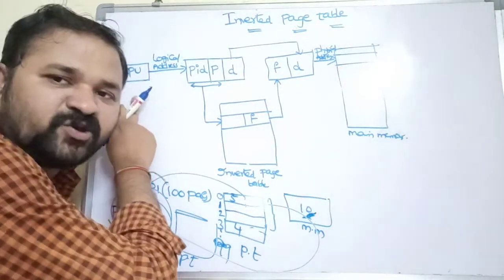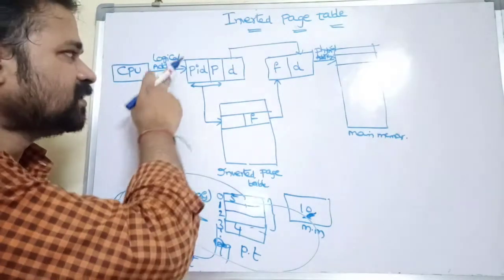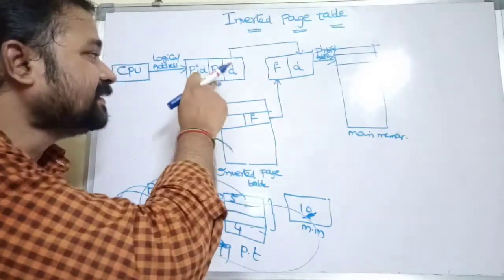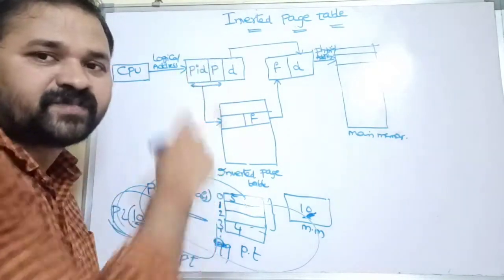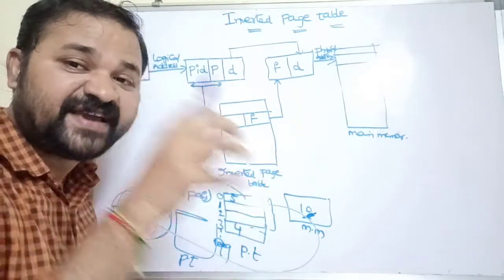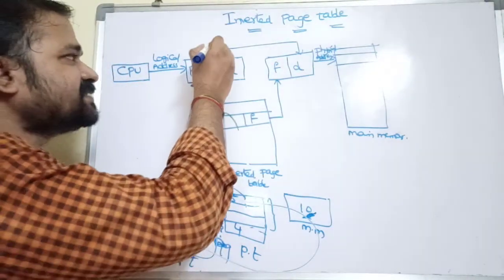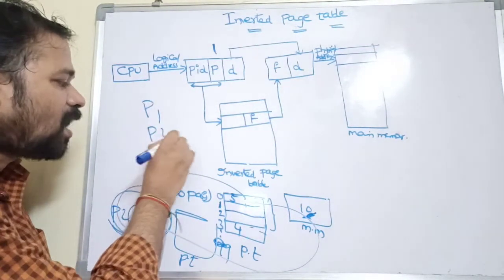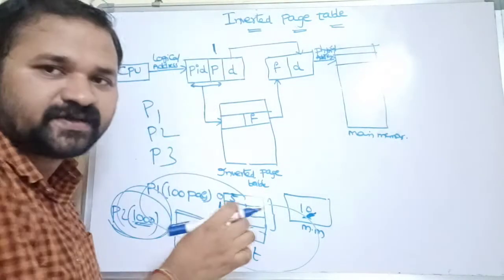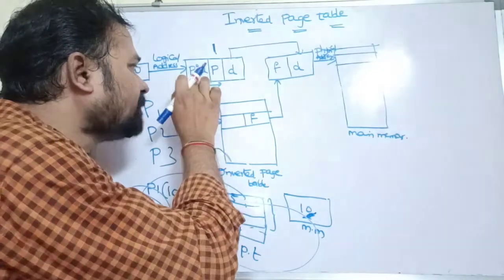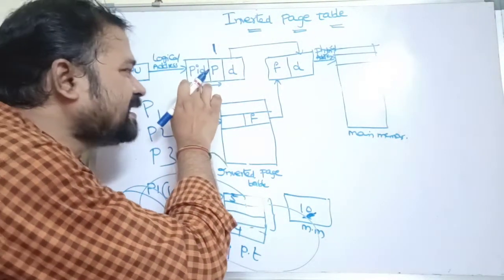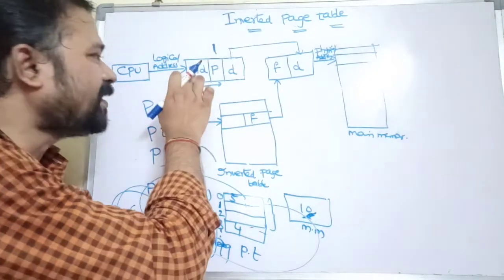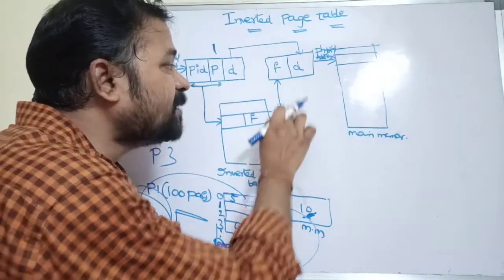Let's see an example. The CPU generates a logical address, which is divided into a page number and offset. But in the inverted page table scheme, in addition to the page number and offset, we also use a PID — process identification number — to identify which process's page we are executing. For instance, page number 1 could belong to P1, P2, or P3, so the PID is needed. The process ID and page number are given as input to the inverted page table, which produces a frame number as output.